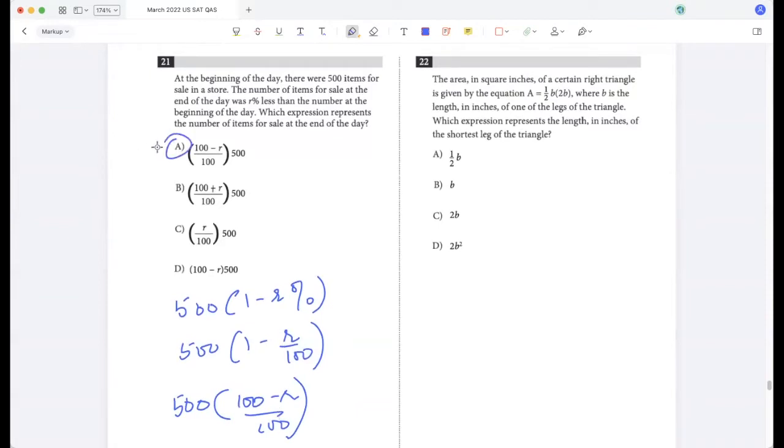Option A: The area in square inches of a certain right triangle is given by this equation where b is the length of one of the legs of the triangle. Which expression represents the length of the shortest leg of the triangle? If you draw this right triangle, because it's a right triangle one leg is b and the other will be 2b because half b times height, and the hypotenuse will obviously be greater than both of them, so the shortest leg would be b.